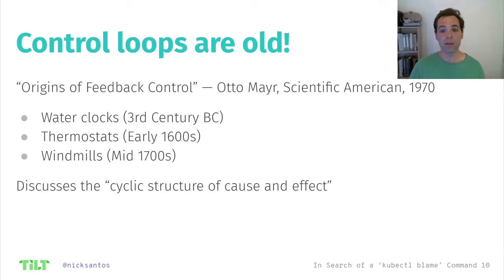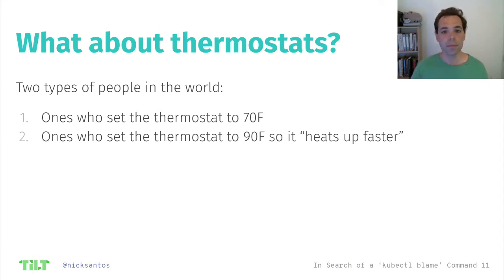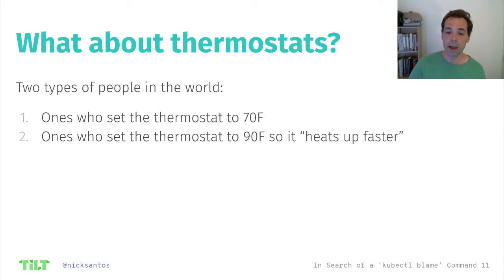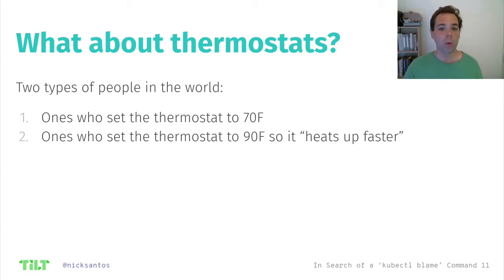You probably don't interact with water clocks and windmills day to day, but you do probably interact with thermostats, and they demonstrate the cyclic relationship between cause and effect that we're describing. Let's say the current temperature is 60 degrees Fahrenheit. You turn the thermostat to 70, wait a bit, then turn it to 90. The heat is on. Did the first setting make the heat turn on, or did the second setting make it turn on? What does it even mean for one change to cause the heat to turn on?